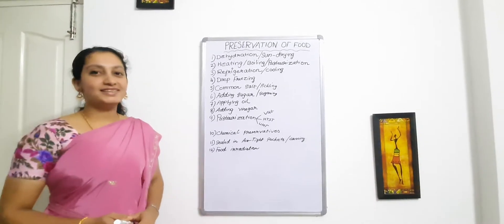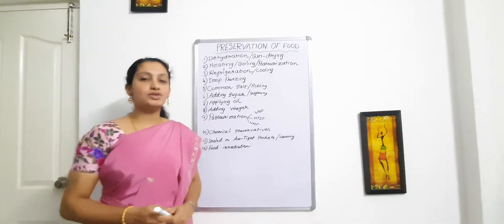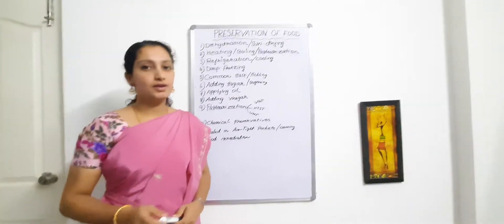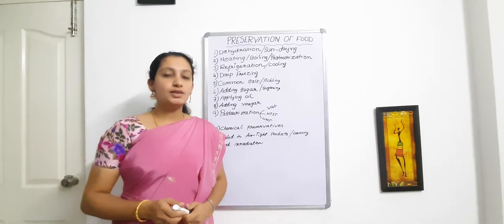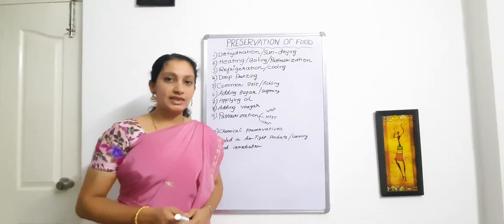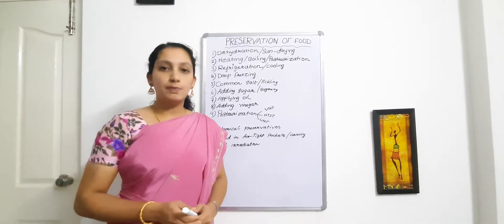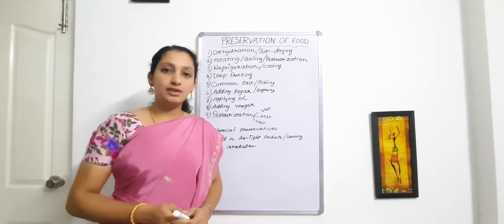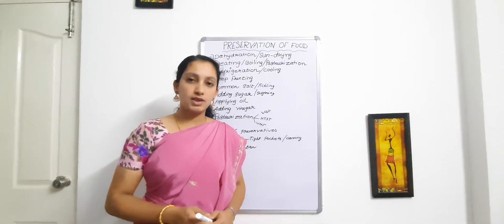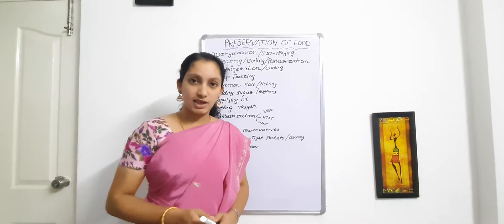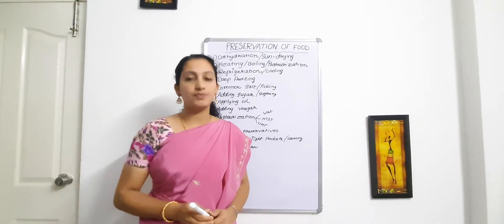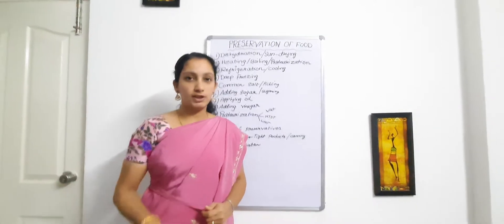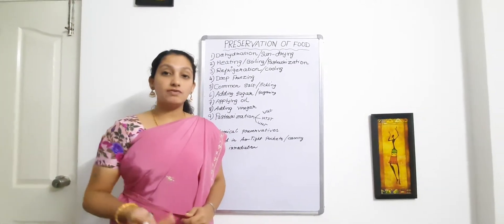Today's lecture is about preservation of food, which is one topic in lesson number two in class 8 CBSE. Food is easily spoiled by microorganisms. The presence of microorganisms and the release of toxins into food cause food intoxications, thereby causing diseases or infections. Today we will discuss what food intoxication is and what preservative methods we can follow to prevent food spoilage by microorganisms.